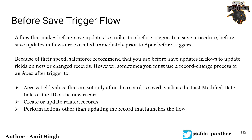Before-save trigger flows run whenever a record is created and before it is committed into the database. When we talk about committed into the database, that means the record ID has not been generated yet. It can be used to update the same record, query on the parent object, query parent-to-parent, or use static values stored in custom labels, custom metadata, custom settings, or another object — then update those records.